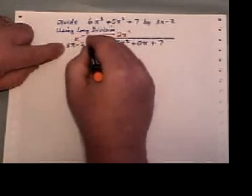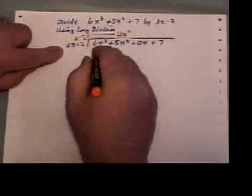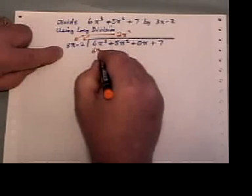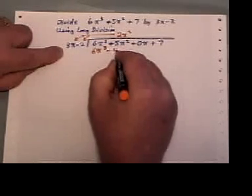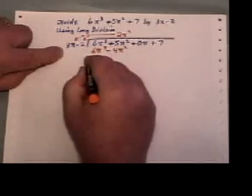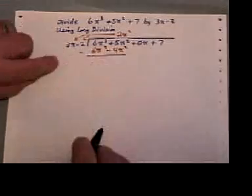And I take the 2x squared, and I multiply it by both of those guys. That would give me a 6x cubed minus a 4x squared. And I'm now going to subtract that.